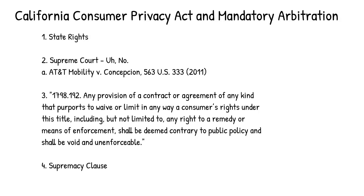The CCPA has a very limited private right of action — consumers can basically only file individual private claims if there's a data breach. If they want to bring a class action lawsuit for a data breach and they can't because of AT&T Mobility, then the consumer private right of action under the CCPA is, for all practical purposes, void. Some people might file in small claims court, but not many. An attorney isn't going to pursue arbitration for $500 — attorneys charge hundreds of dollars an hour, so the math doesn't work.